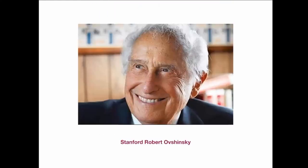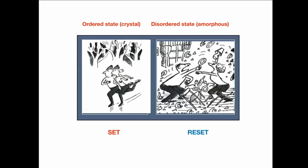Phase change materials were widely studied by Ovshinsky. His idea was that when a material cycles between an ordered crystalline state (set state) and a disordered amorphous state (reset state), its structure changes and so do its properties — both optical and electrical.